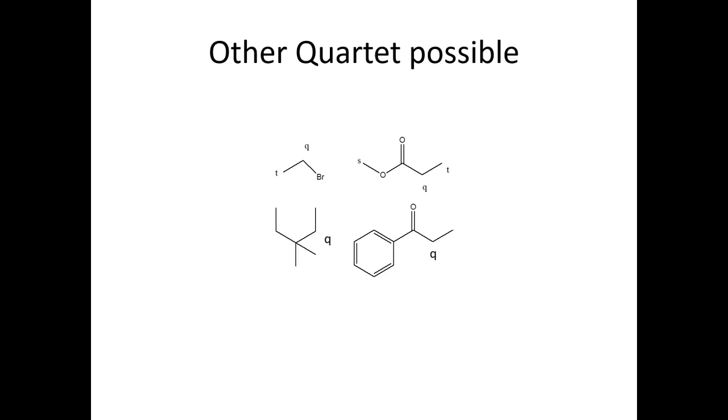These are other possible molecules which give you the quartet. This proton here is quartet, here is also quartet, here is also quartet. This TCH2 proton is also quartet. This is a typical example of the ethyl acetate molecule.